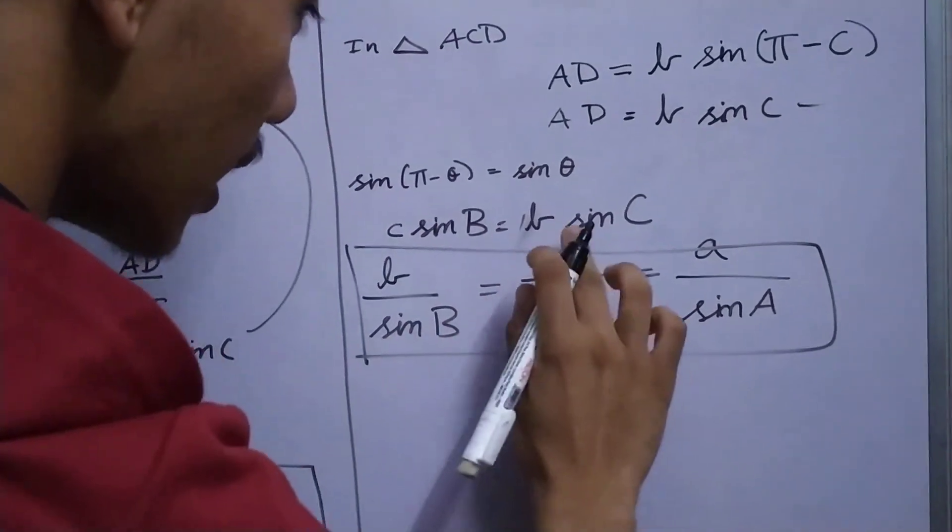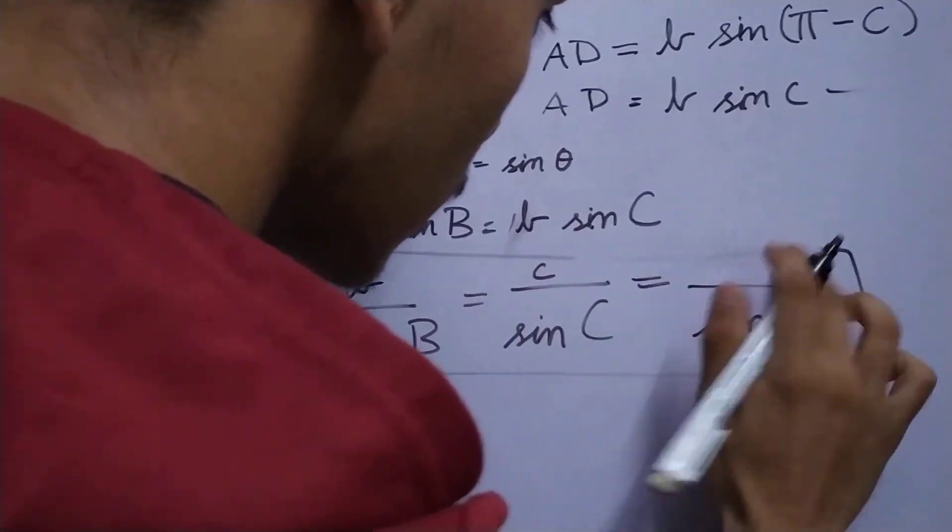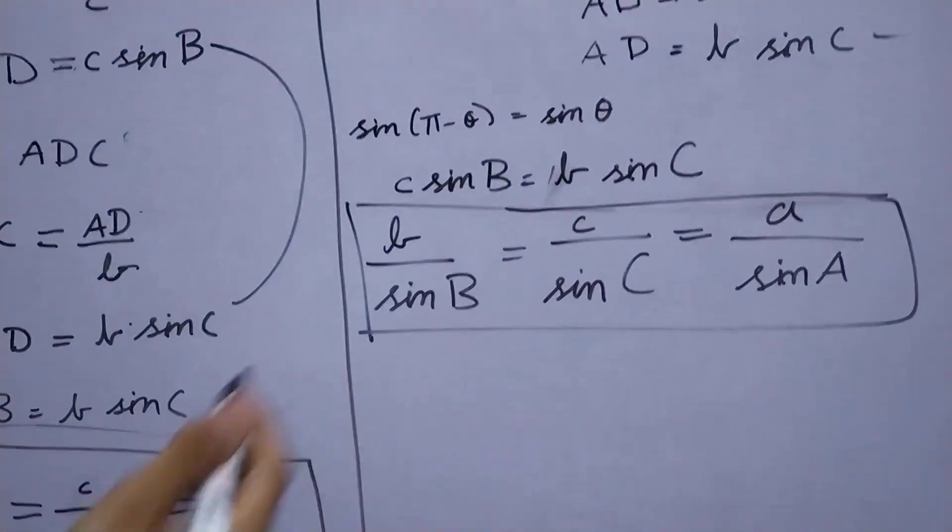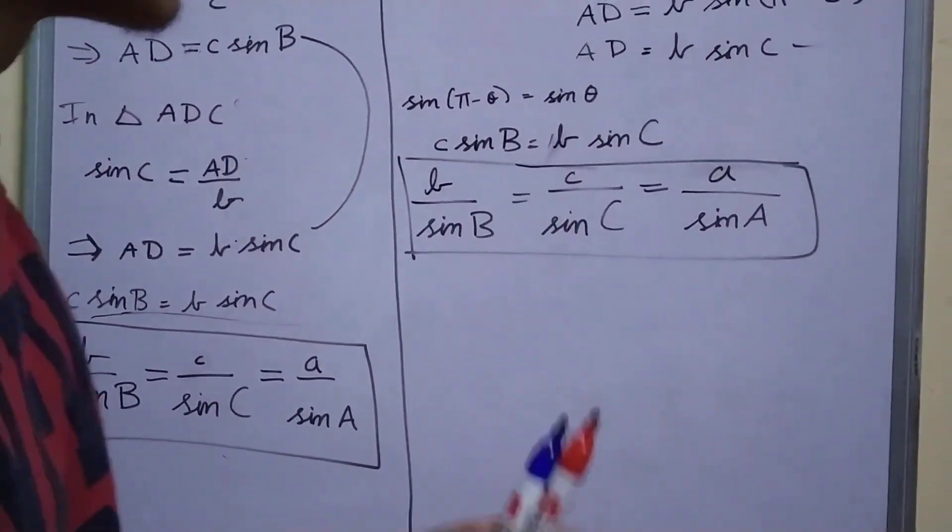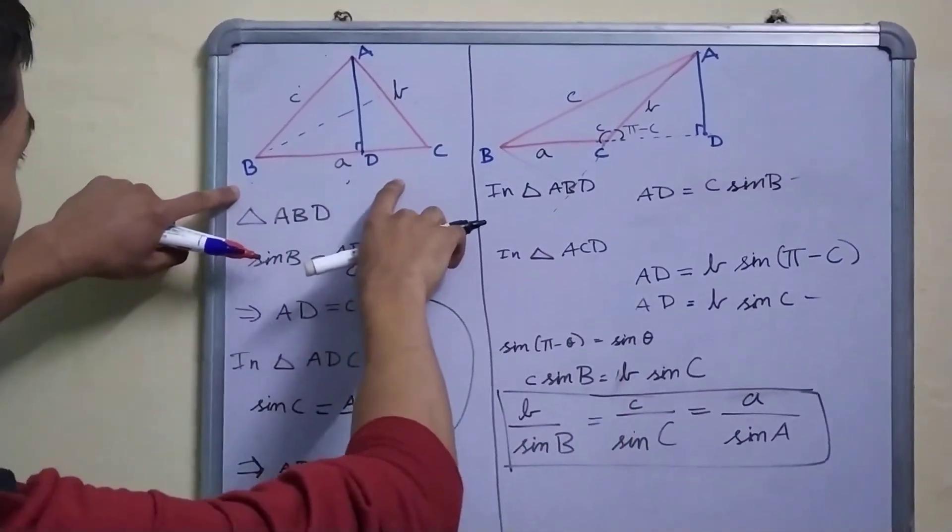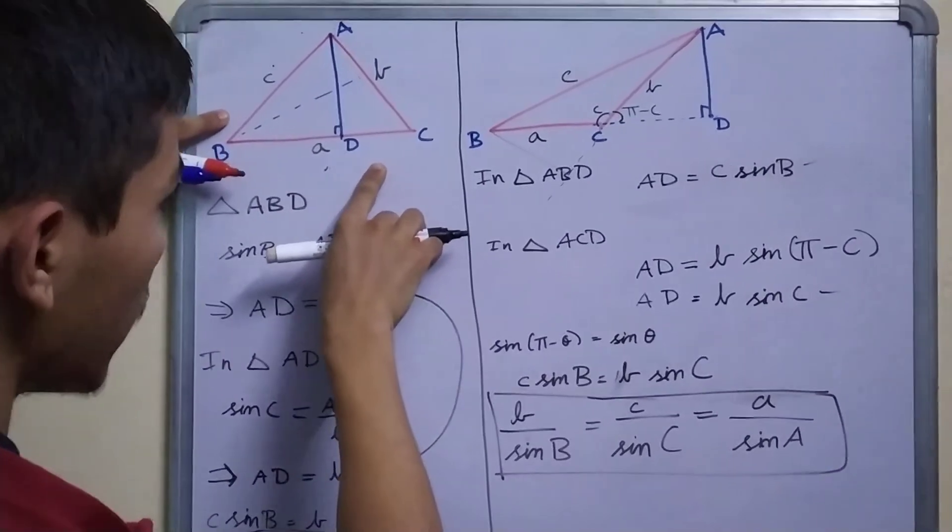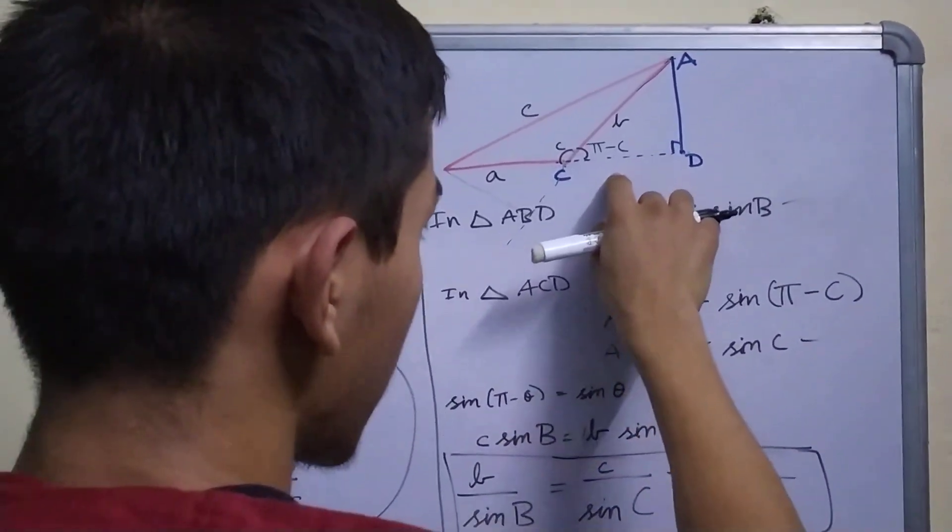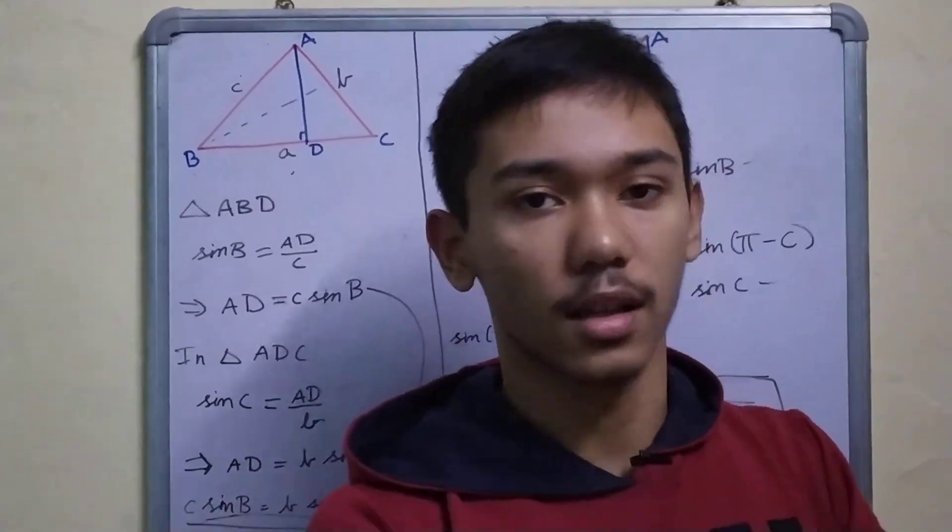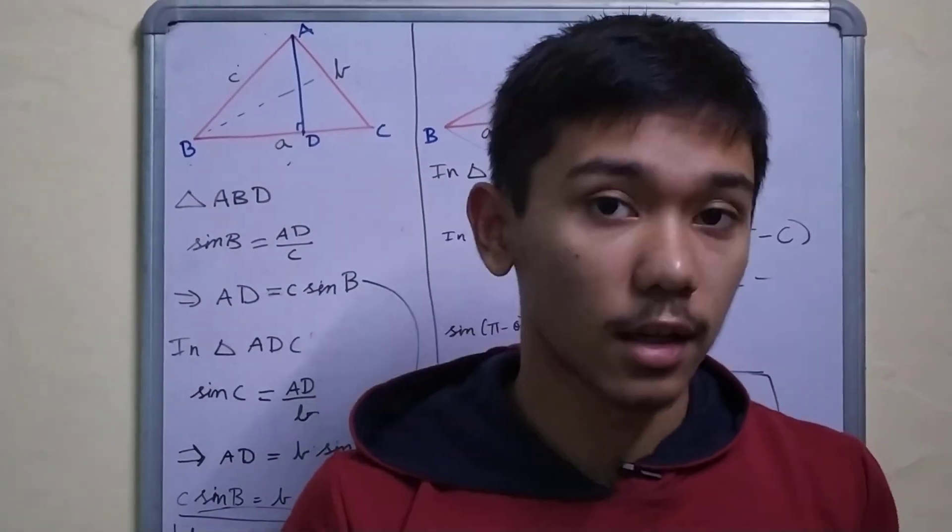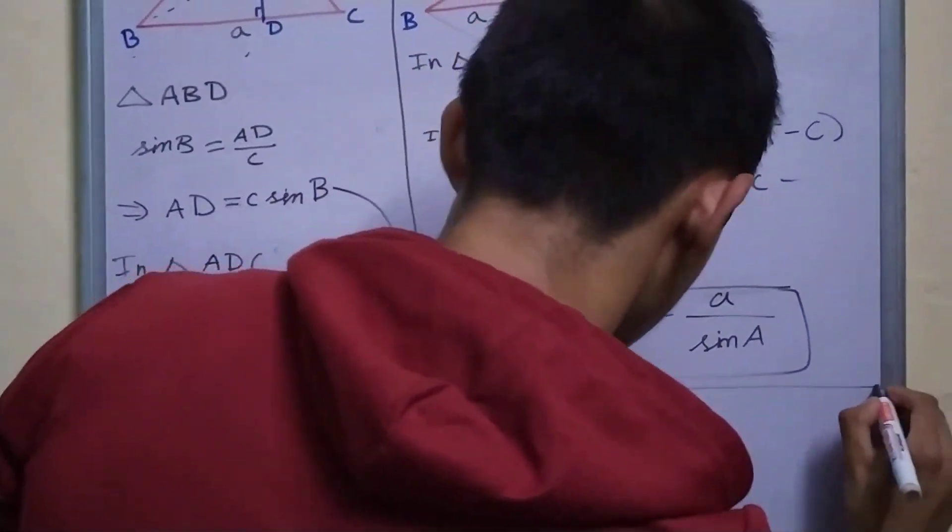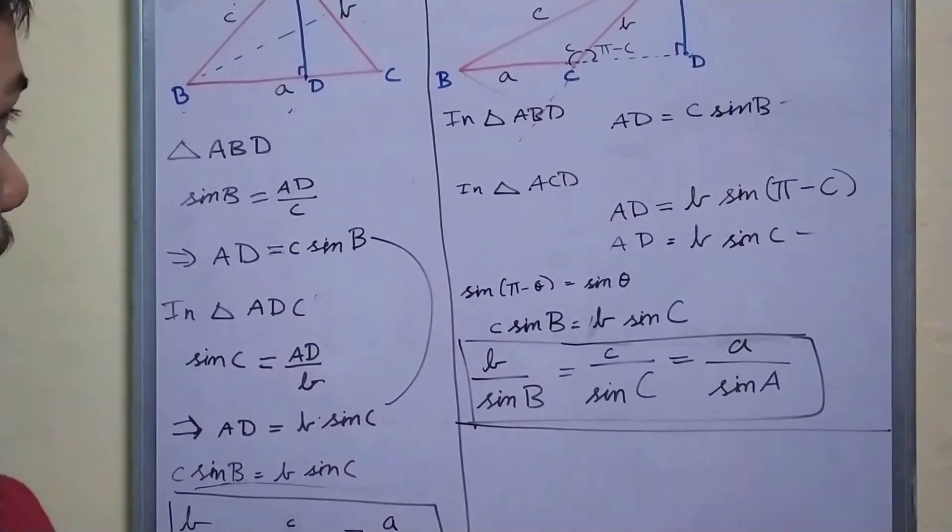So as you can see, this relation holds for acute angle triangles as well as obtuse angle triangles. Now we have seen that it works if all angles are less than 90 degrees, it works if one angle is greater than 90 degrees. Does it work if an angle is equal to 90 degrees? Does it work for a right angle triangle? Well, yes, it does.